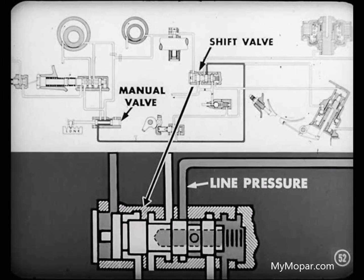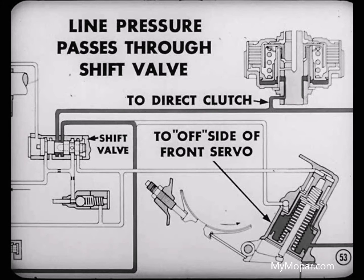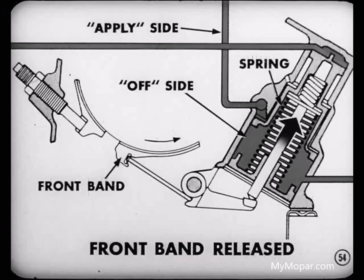Now that we got the shift valve moved, what happens next? Well, you remember, we brought line pressure to the shift valve, but it was stopped from entering by the land in the center of the shift valve. Now that the valve has been moved, this line pressure is allowed to pass through the shift valve. This oil then goes to the direct clutch and to the offside of the front servo. Pressure on the offside of the front servo piston, aided by the return spring pressure, overcomes the force on the apply side of the front servo. So, the front servo piston moves back, releasing the front band.